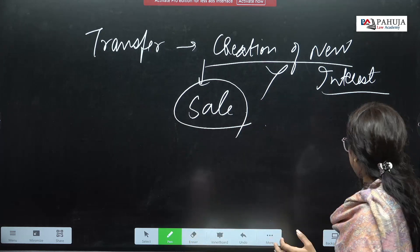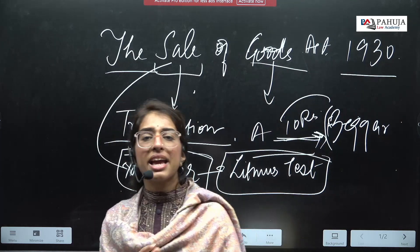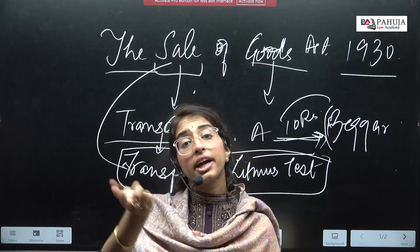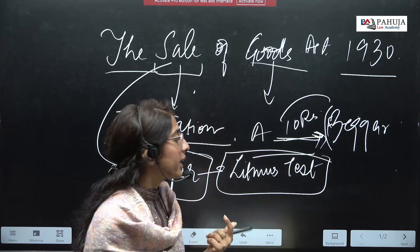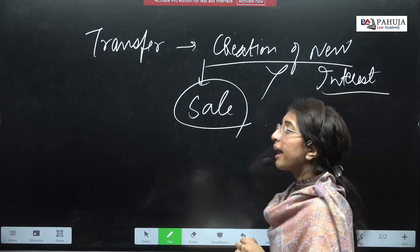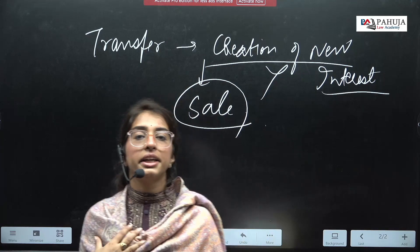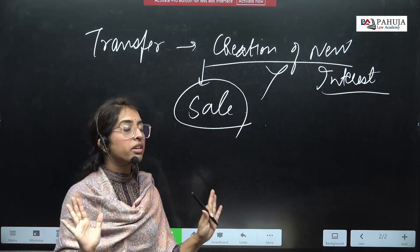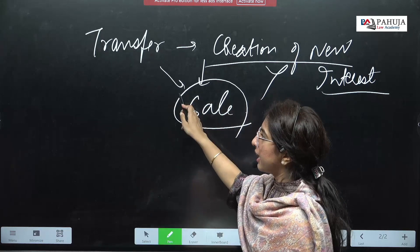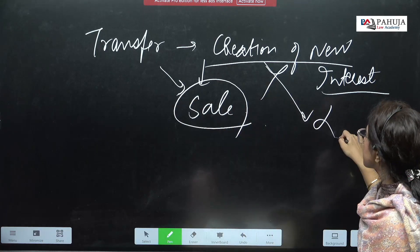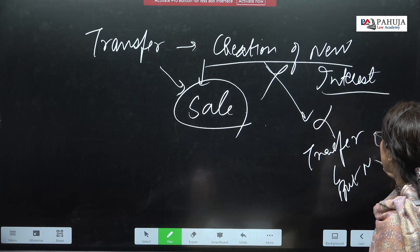What is sale? Sale is any kind of transaction, meaning any kind of transfer. Now, not every transfer is a sale. So we applied a litmus test: any kind of transfer in which a new interest is created in my favor — that transfer will be sale. If no new interest is created, it will be a normal transfer, but not a sale.